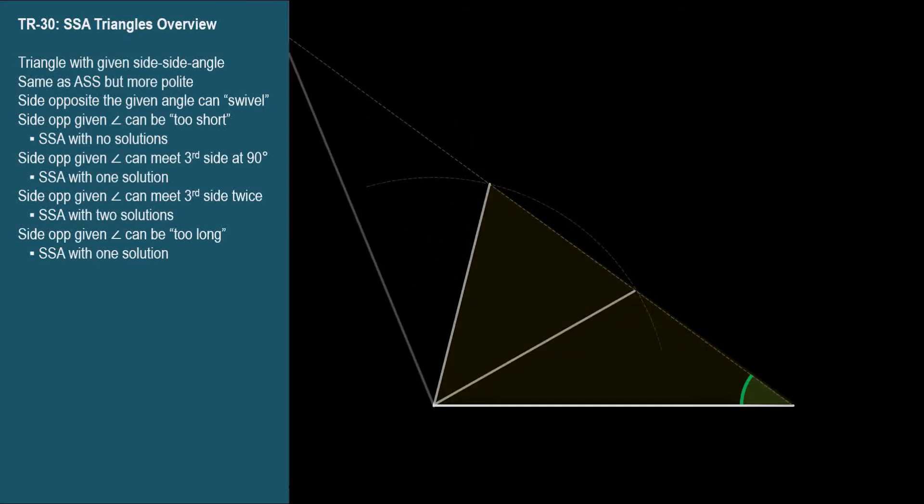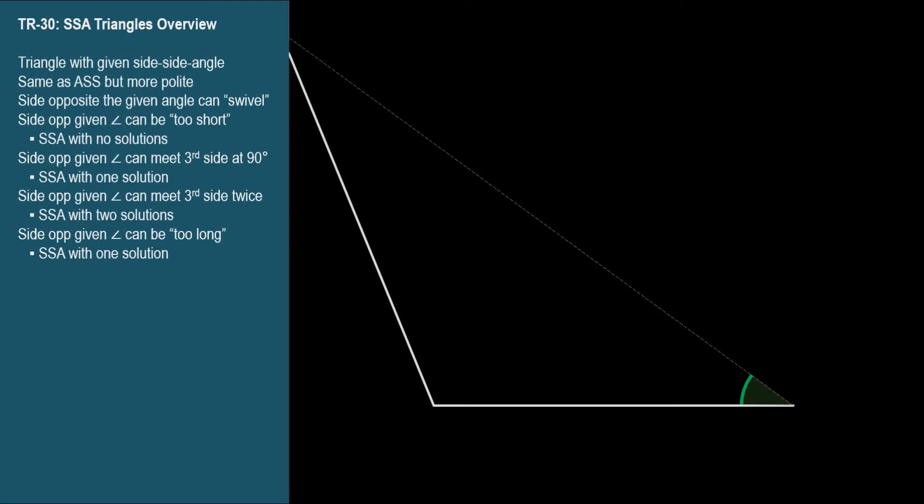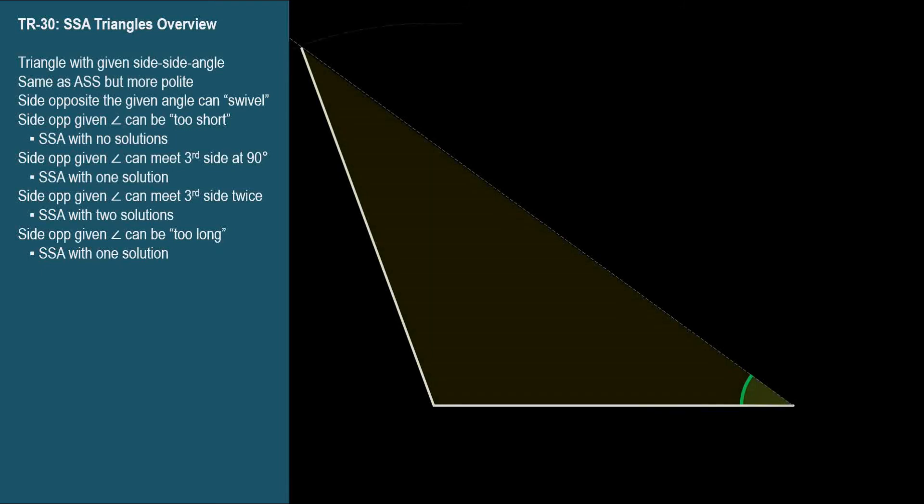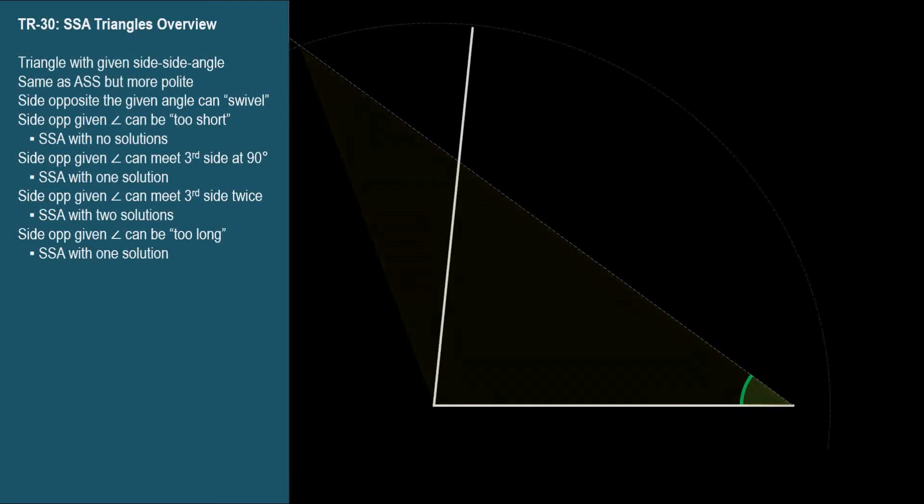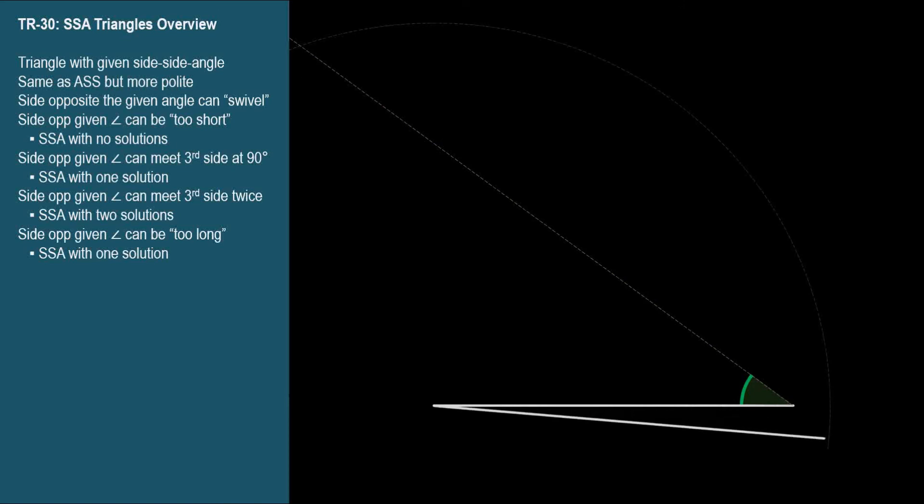Finally, we let the swiveling side get even longer, longer than the other given side. It can form a triangle up here, but when it swivels down, it's on the wrong side of the given angle's vertex, so there's no second triangle possible. So this is another SSA triangle with one solution.